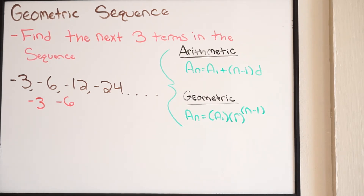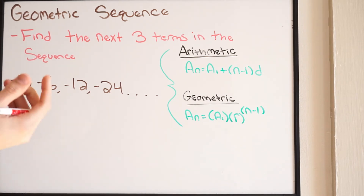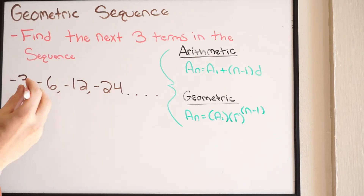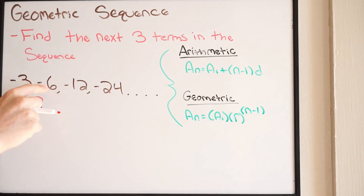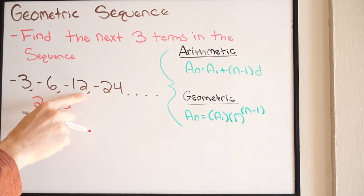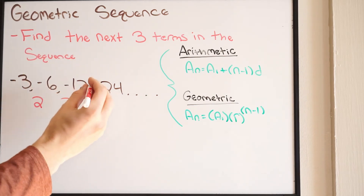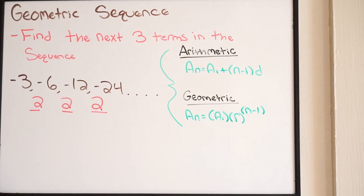Let's check to see if it's going to be geometric. We do that by checking the ratios of the terms. If it has a common ratio, it will be geometric. You take your second term and divide it by your first term — negative 6 divided by negative 3 gives you 2. Then your third term divided by your second term: negative 12 divided by negative 6 gives you positive 2. Then the fourth term divided by the third: negative 24 divided by negative 12 is positive 2. So we have a common ratio between all of our terms, and we call that R.